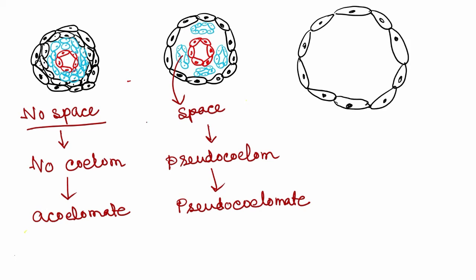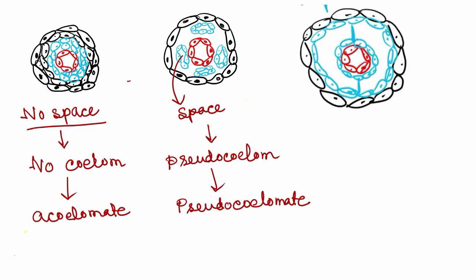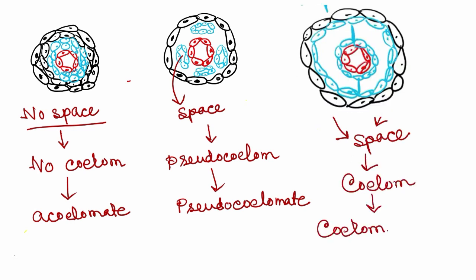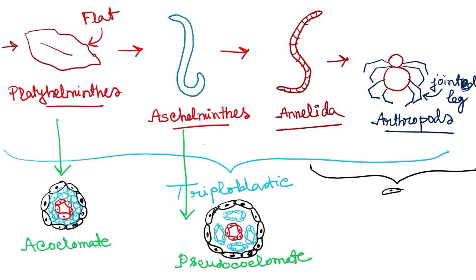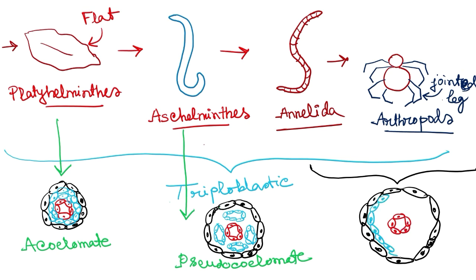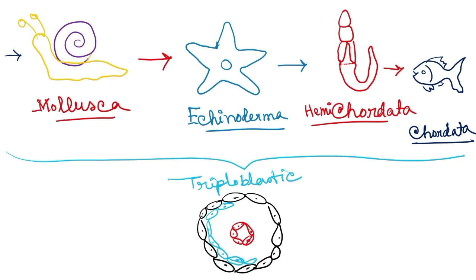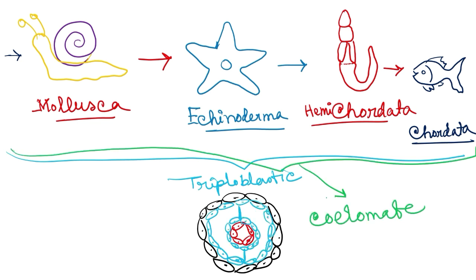The third type of germ layer distribution features ectoderm, endoderm, and a body cavity between them, but here the coelom is surrounded completely by a continuous mesodermal cell layer. This type of coelom is called a eucoelom or true coelom, and the animals are called coelomates or eucoelomates. This true coelom is found in all phylums from Annelida up to Chordata — all of them are eucoelomates, meaning the coelom is fully surrounded by continuous mesodermal cell layers.